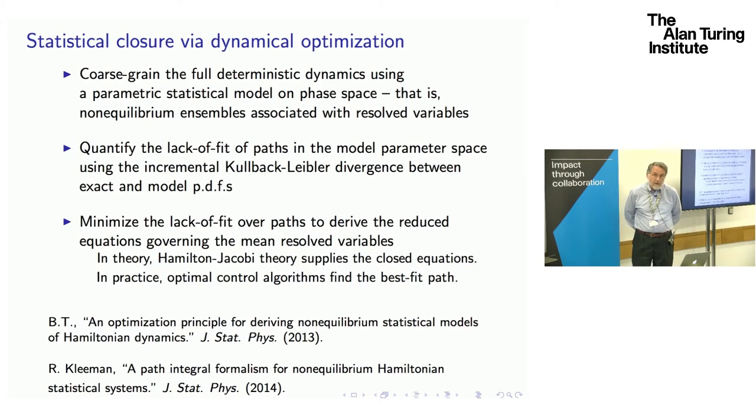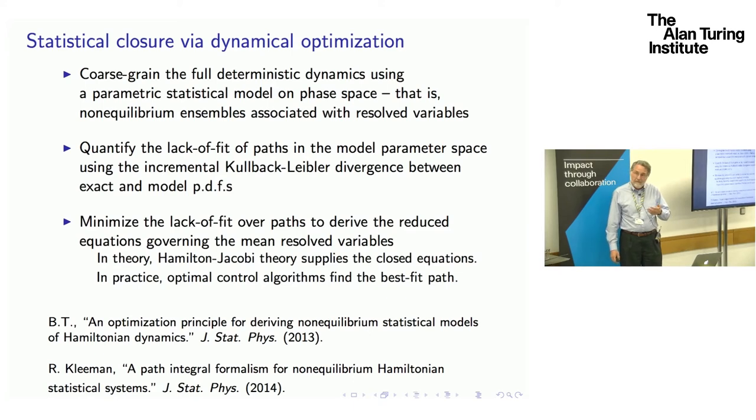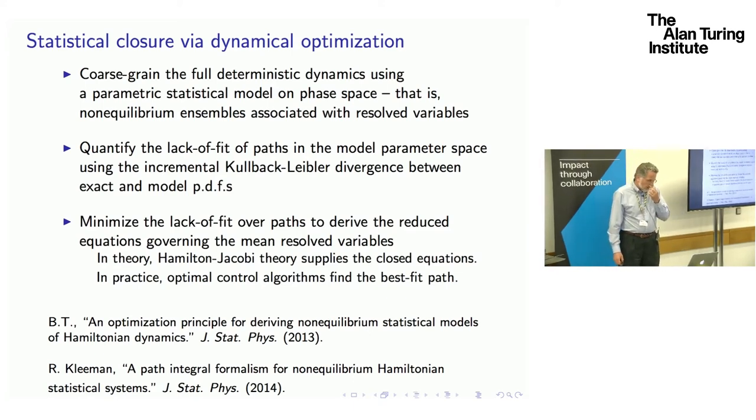Then the question is, how do those things evolve in time? What we want to do is quantify the lack of fit of any path among those ensembles, which I'll call trial densities. What is the intrinsic lack of fit to the underlying dynamics? We can do that by looking at the Kullback-Leibler or information or relative entropy distance or divergence between how the true distribution should be propagated forward by the full dynamics as opposed to any kind of feasible propagation through this parametric family.